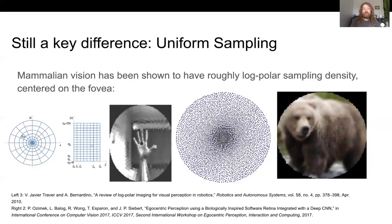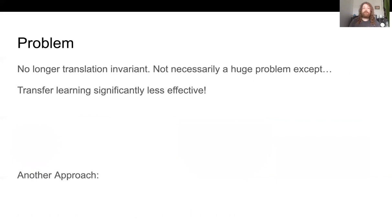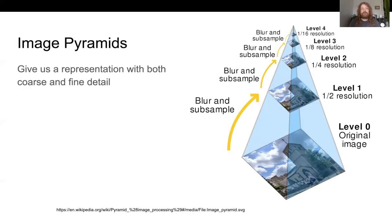On this slide you can see examples of approaches that do log-polar sampling or fovea-centered sampling. You can apply a convolutional neural network even with this log-polar mapping, but the problem is this is no longer translation invariant. The images are very warped towards the center once mapped onto a pixel grid. This isn't a huge problem except we should no longer really hope for our transfer learning to work since the domain is so different. So what we're going to do instead is use image pyramids.